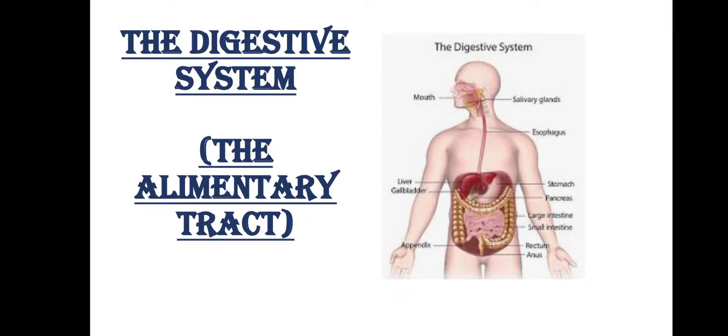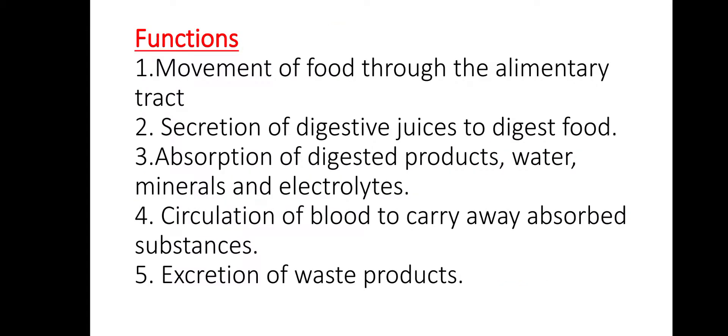The digestive system, or the alimentary tract. Functions of the digestive system: the 1st one is the movement of food through the alimentary tract; the 2nd one is the secretion of digestive juices to digest food.